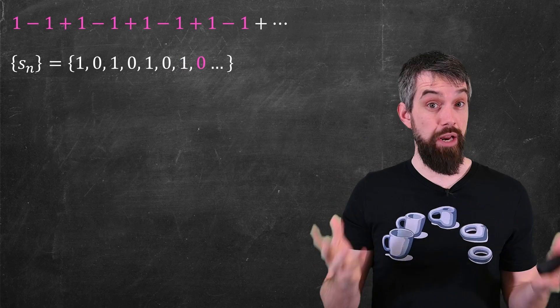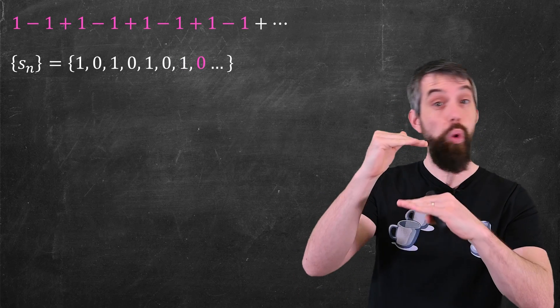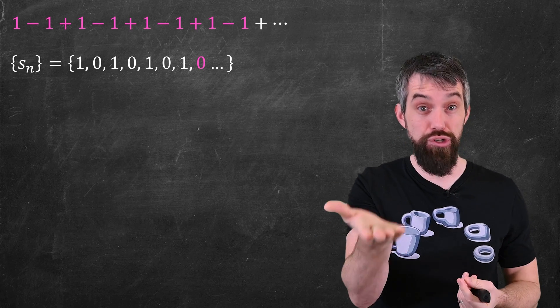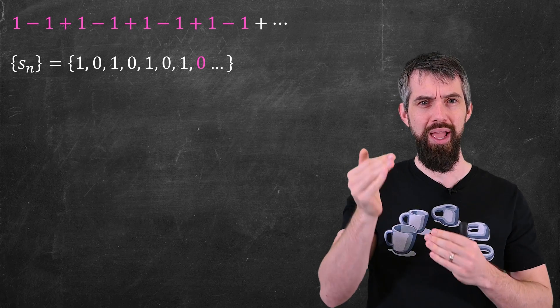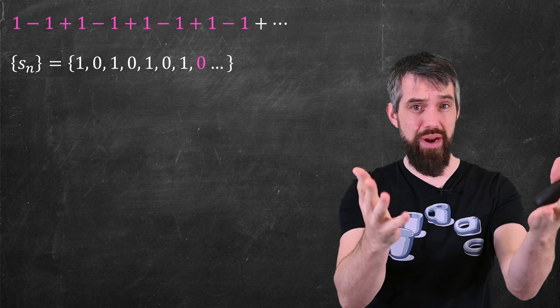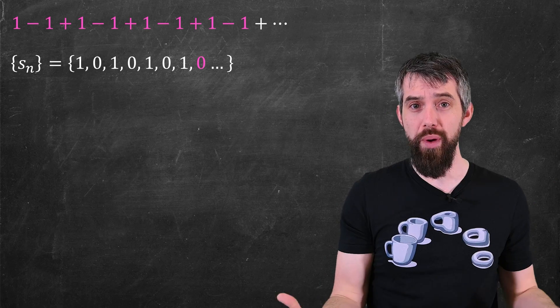We say that this series diverges, because that sequence, 1, 0, 1, 0, 1, 0, the sequence of partial sums, it never converges, it never settles getting arbitrarily close to one number. It always bounces around between 1 and 0. And that's great, that's the notion of convergence that we use all the way through calculus.